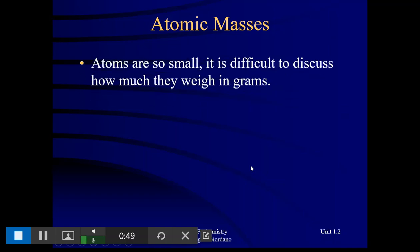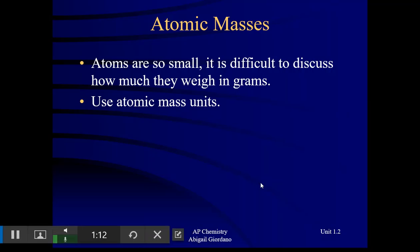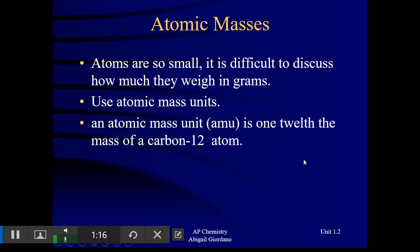If you'll recall, we talked a little bit about this in unit 1.1. Atomic masses for any element on your periodic table are in atomic mass units. That is the mass of one atom of that particular element. And an atomic mass unit is equal to 1/12th the mass of a carbon-12 atom.